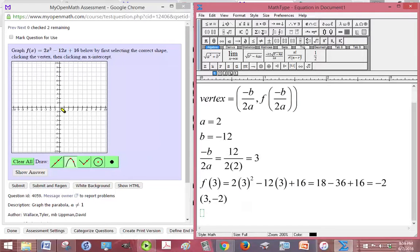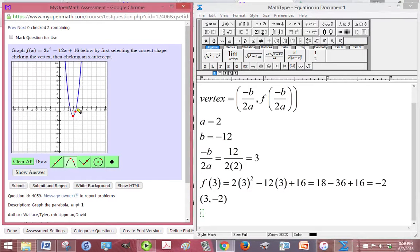All right, so we can plot that 3, negative 2 right here, and it's a positive graph, so when we plot our intercept, it should be going up, not down like this.